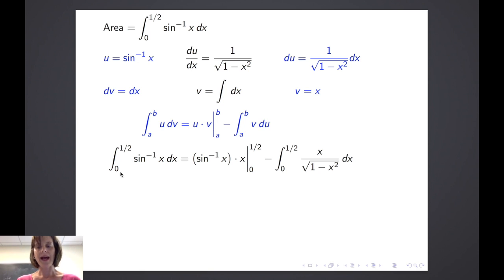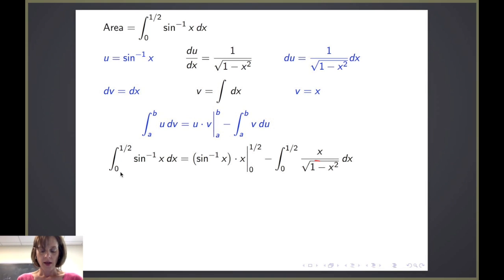Recall from the first video that we want to ask, did we make an improvement? If I want to make a substitution and let my u, although we won't use u in this case because we've already used it, if we let my w be 1 minus x squared, the derivative of w will be a negative 2x dx, and I see a multiple of negative 2x dx in that numerator.